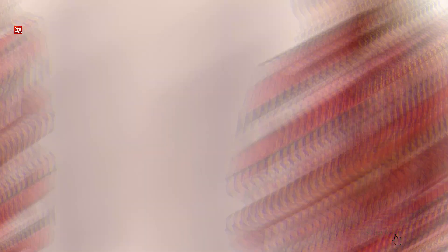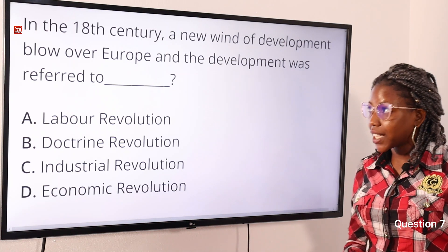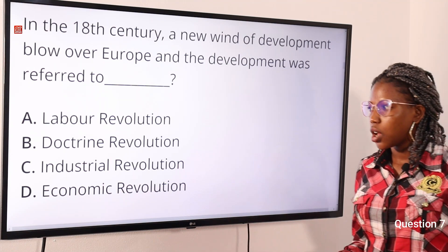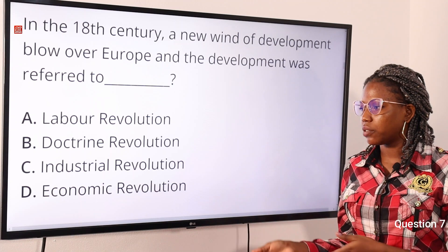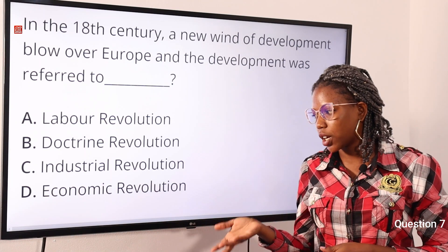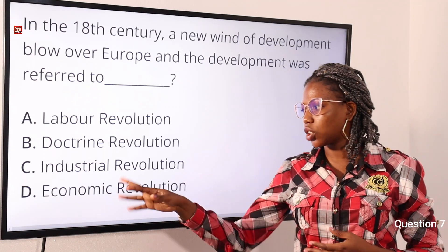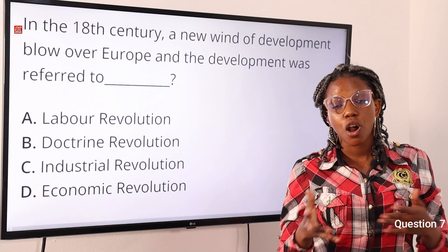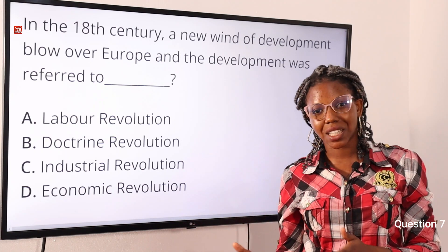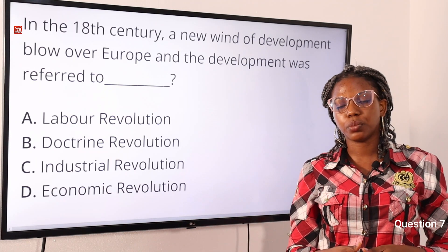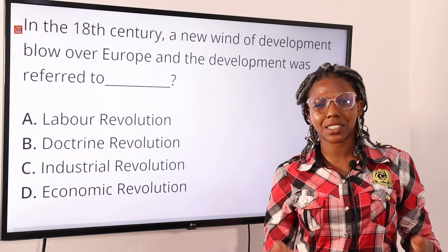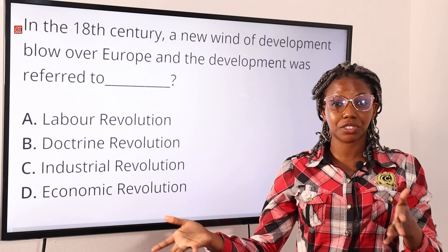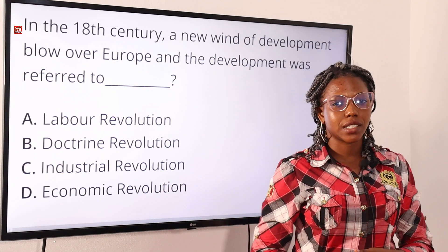Question seven: in the 18th century, a new wave of development blew over Europe and the development was referred to as — option A: labour revolution, option B: doctrine revolution, option C: industrial revolution, option D: economic revolution. The answer is option C, industrial revolution. The industrial revolution is the transition to new manufacturing processes in Europe and the United States, from about 1760 to 1820–1840, which falls in the 18th century.